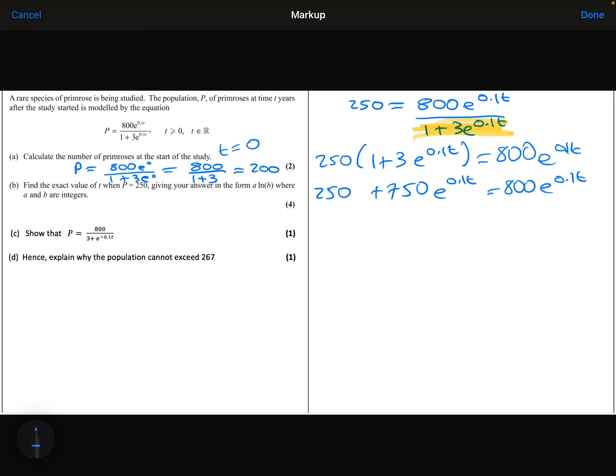So I'm going to take away the 750 e to the 0.1t off both sides. So 800 take away the 750 is 50. I am now going to divide both sides by 50. So 250 divided by 50 is 5. Now I've finally got the exponential term to be all by itself.